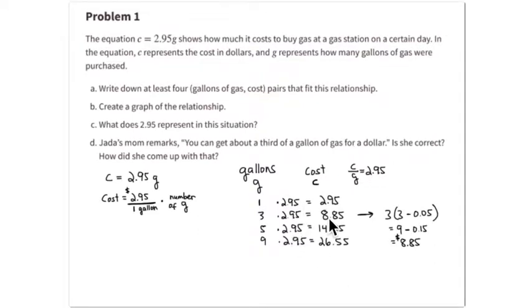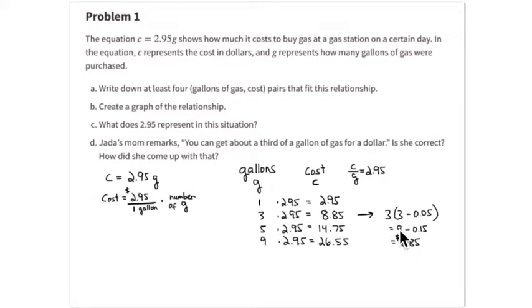I'll use one example to show how you can calculate these values in your head. If you notice that two dollars and ninety-five cents is just five cents less than three dollars, you can use the distributive property. For three gallons, that's three times three dollars minus five cents. Three times three dollars is nine dollars, and for every three dollars you subtract five cents, so three times five cents is fifteen cents — nine dollars minus fifteen cents equals eight dollars and eighty-five cents.